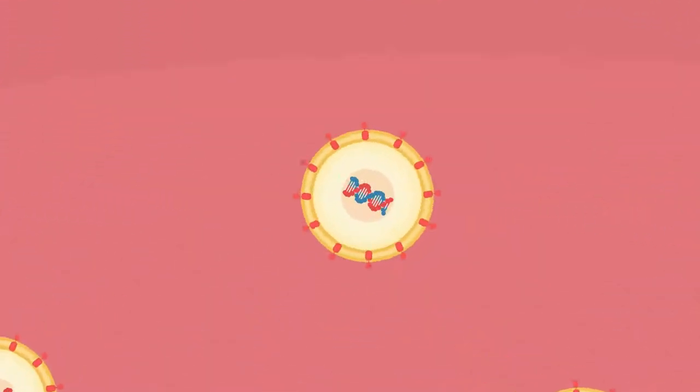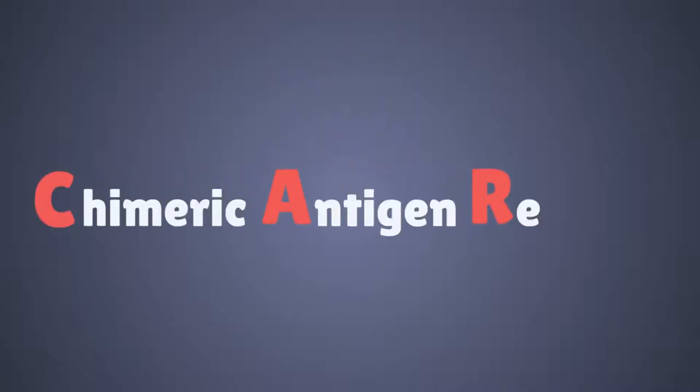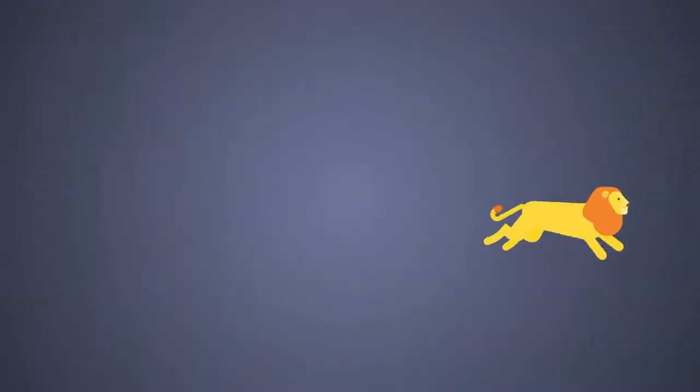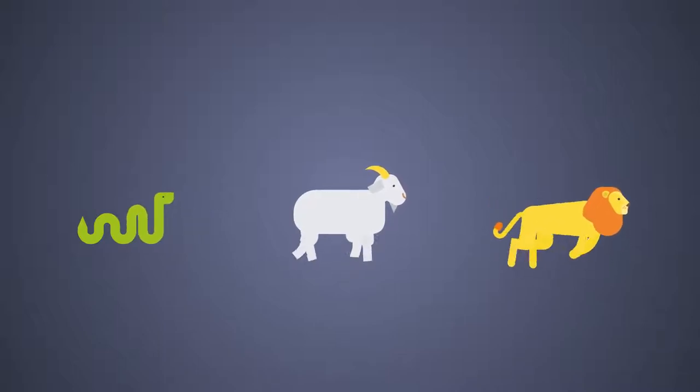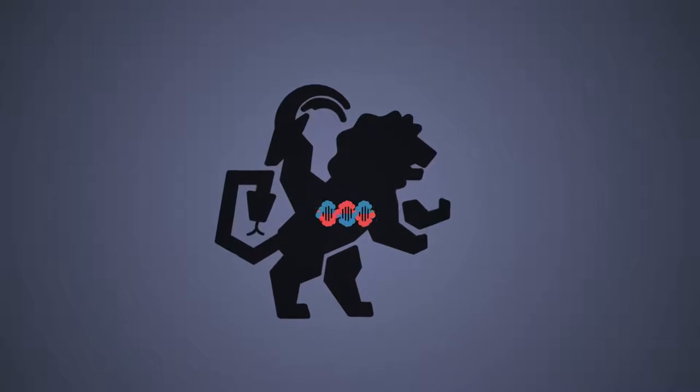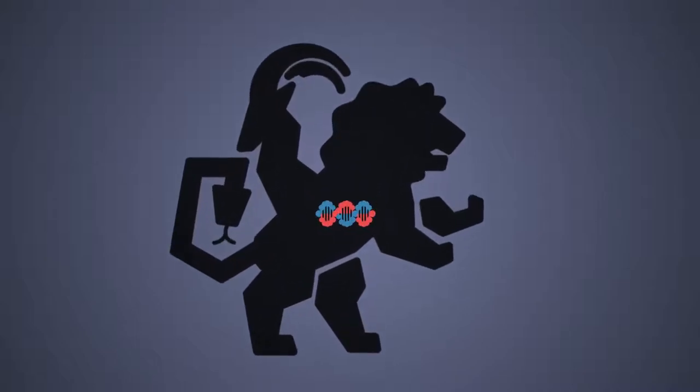CAR stands for Chimeric Antigen Receptor. The name is derived from ancient Greek mythology of a monster that had a lion's head, a goat's body and a serpent's tail, different genetic material in one. So Chimera is used to describe something that contains two or more different types of DNA.